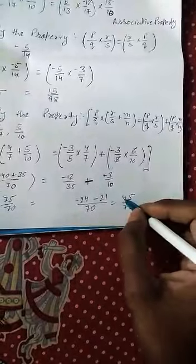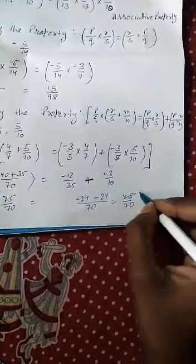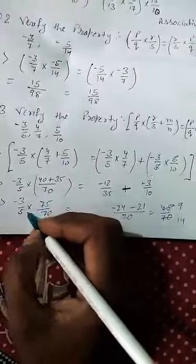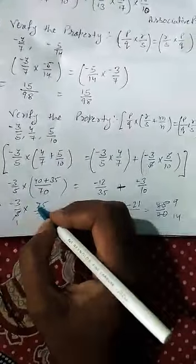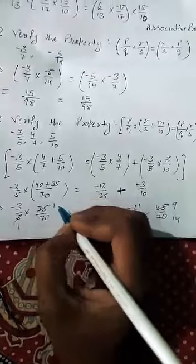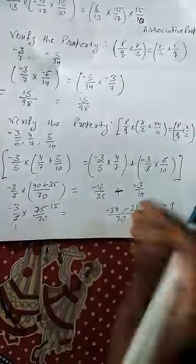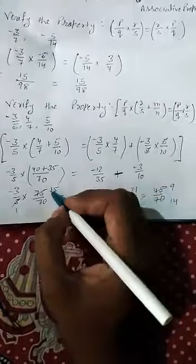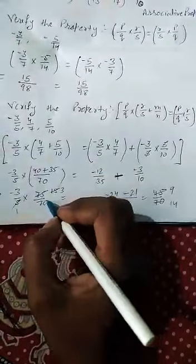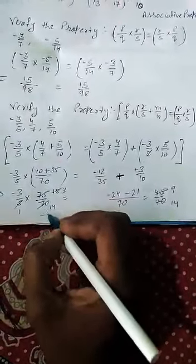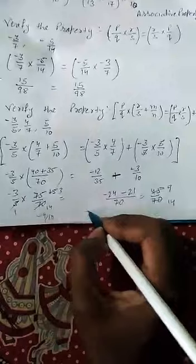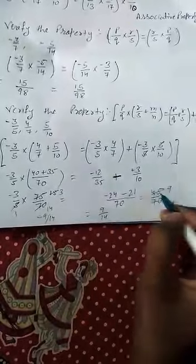If I cancel this, 5 goes into 45 nine times and 5 goes into 14, so 9 by 14. And here also we cancel, 5 goes into 75 fifteen times, 5 goes into 5 once, and 5 goes into 25. Again we do it, 5 goes into 15 three times, and 5 goes into 14. So what do we get? Minus 9 by 14. And on the right side what do we get? 9 by 14 minus.